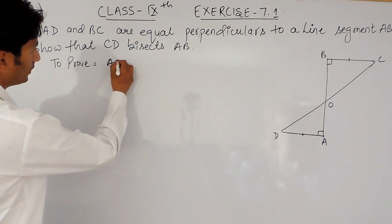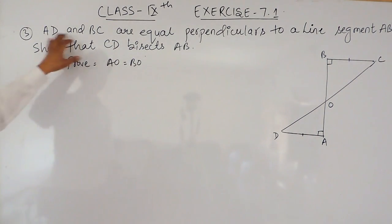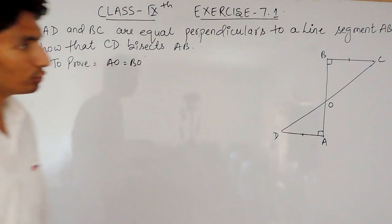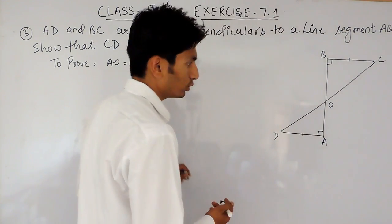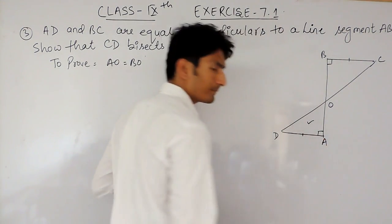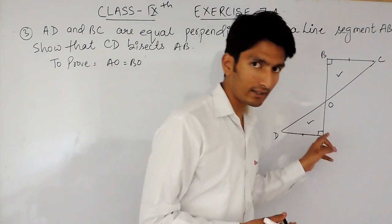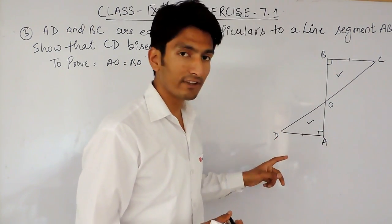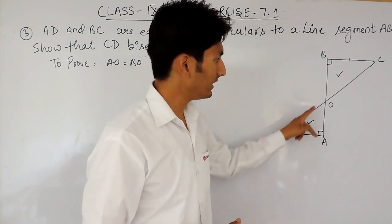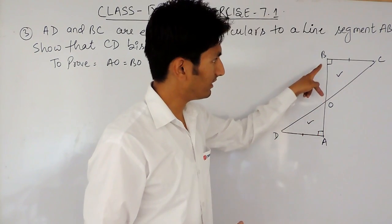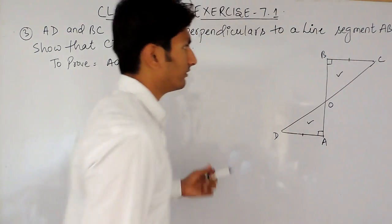To prove that AO equals BO, what we need to do is prove that these two triangles are congruent. If we are able to prove that, then obviously by CPCT — that is, Corresponding Parts of Congruent Triangles — we can prove that this side will be equal to this side.